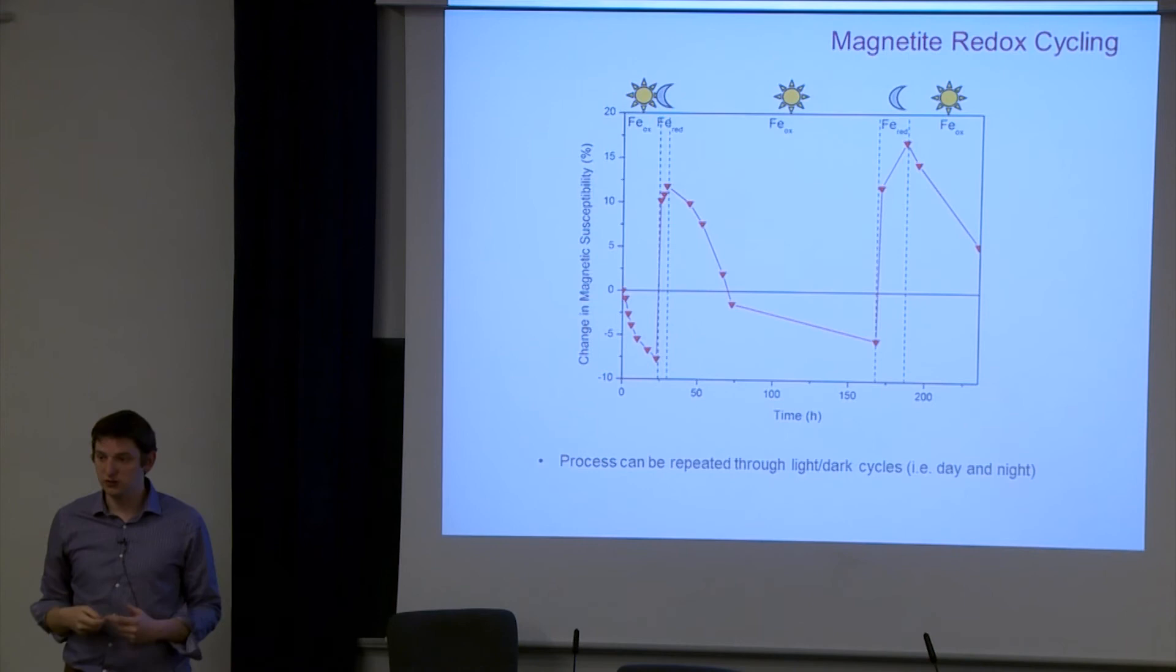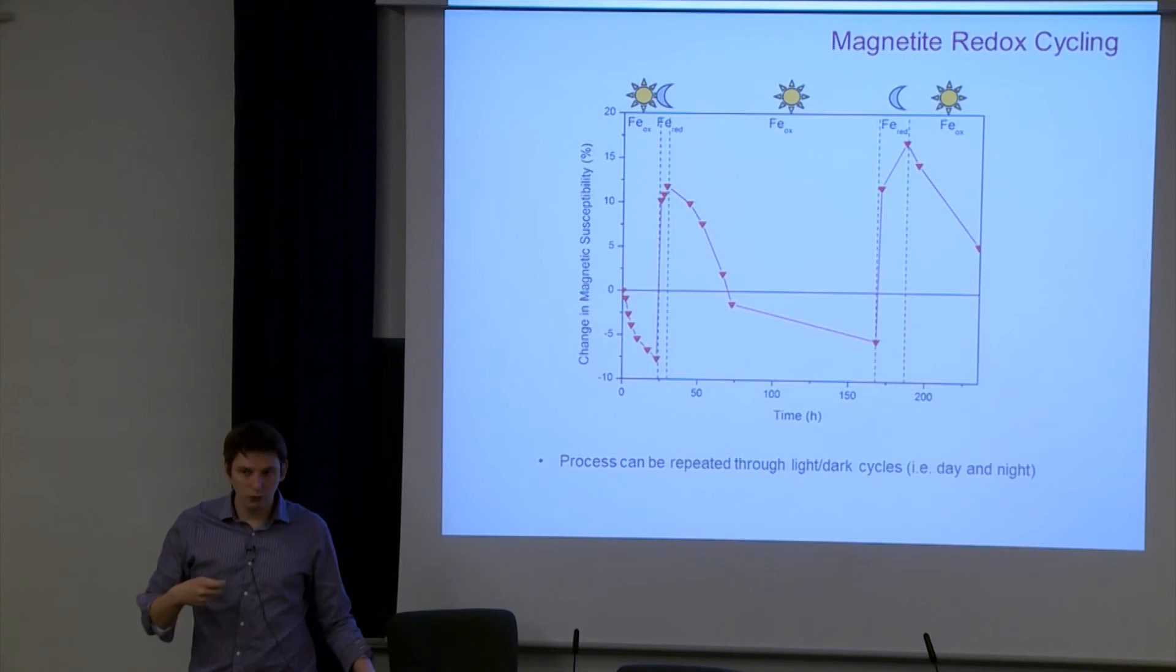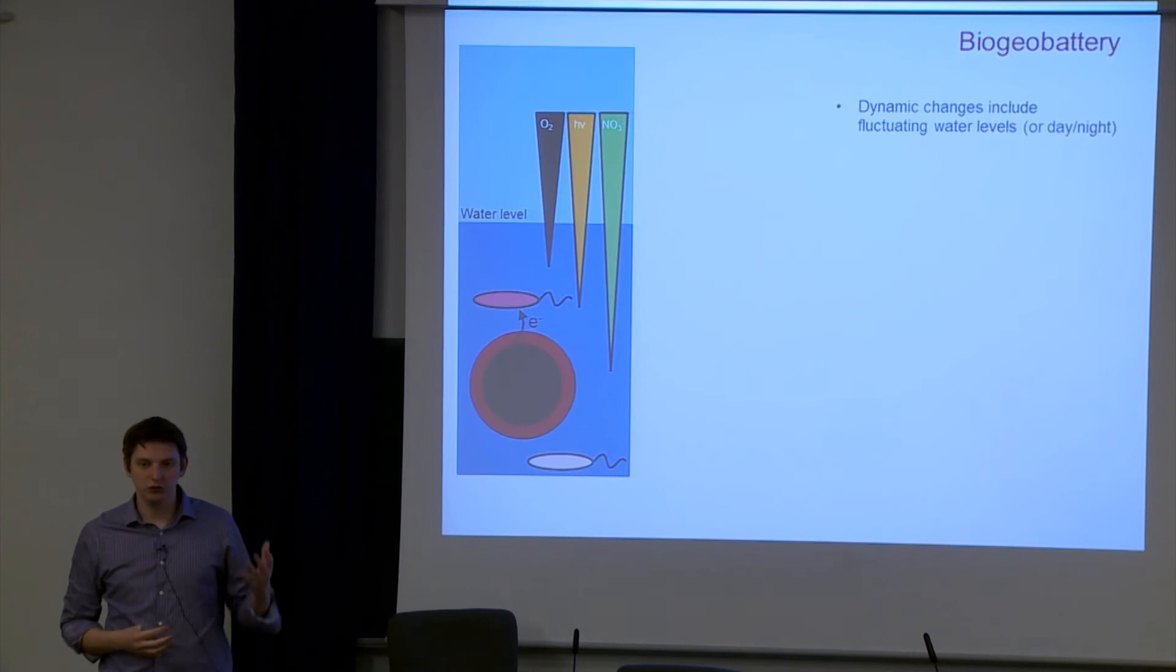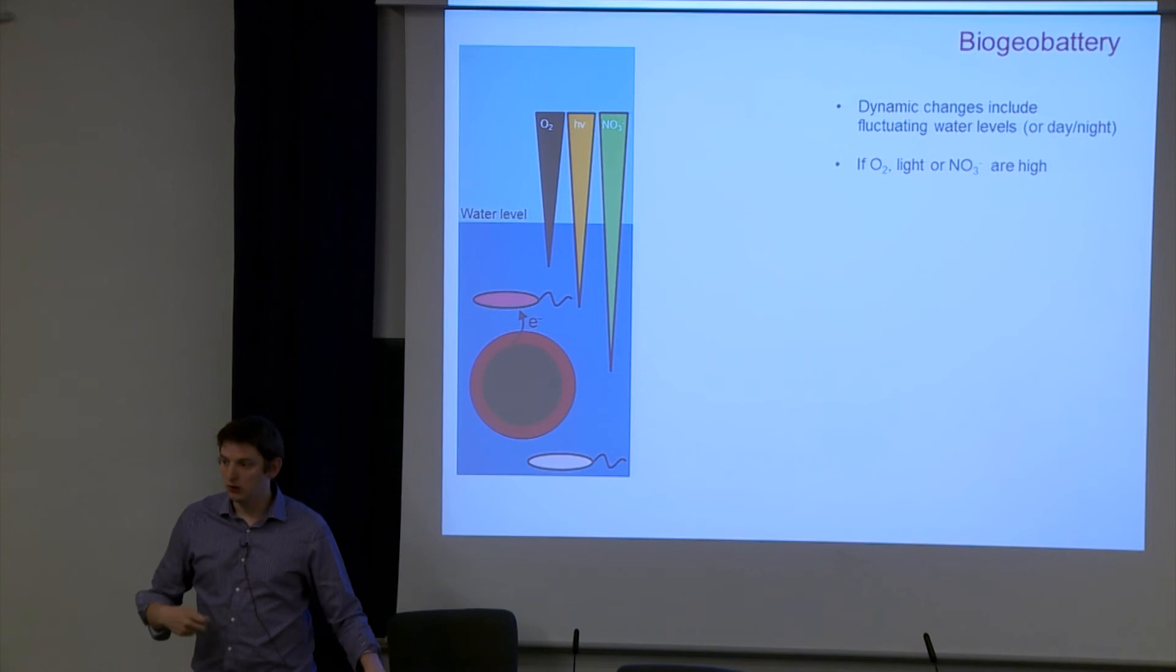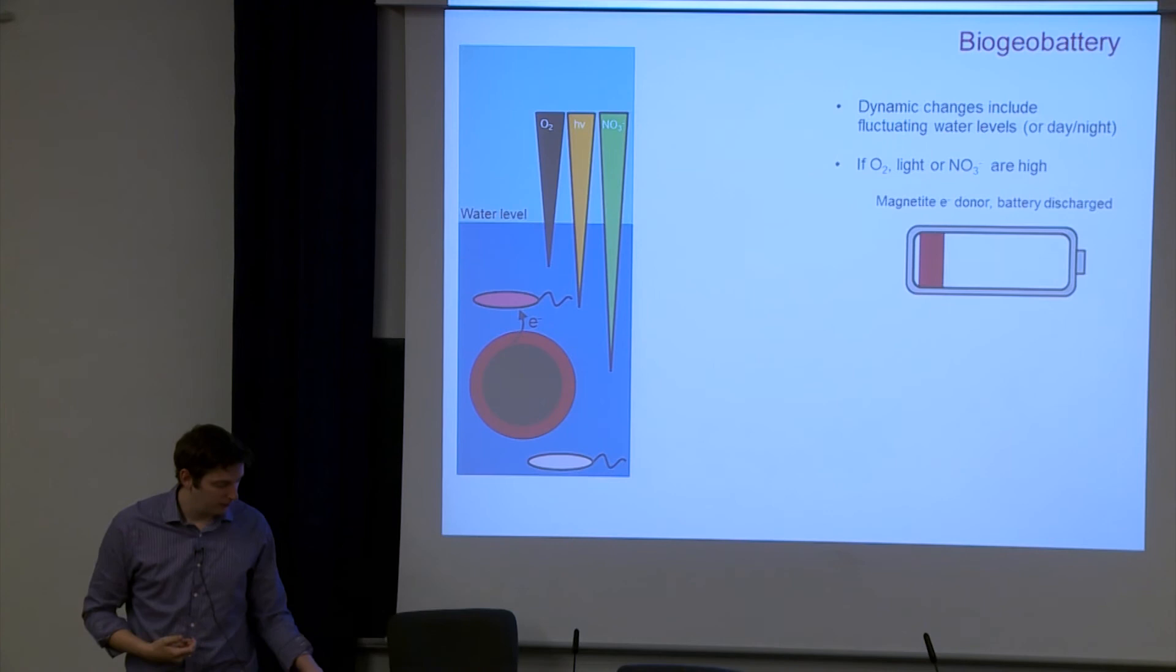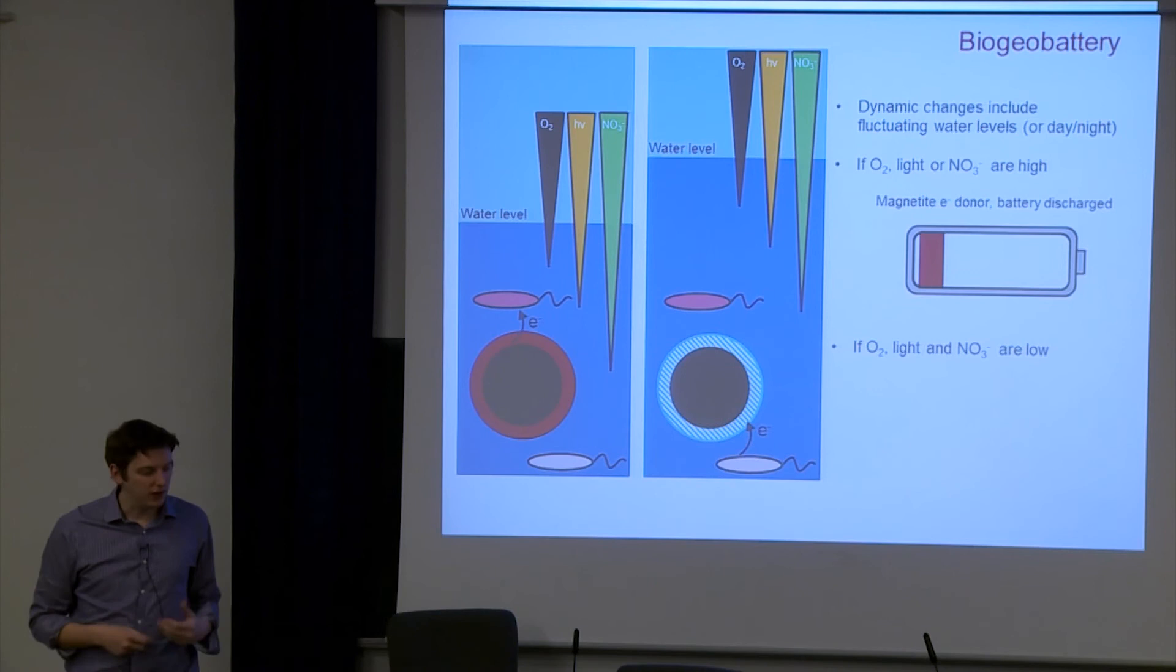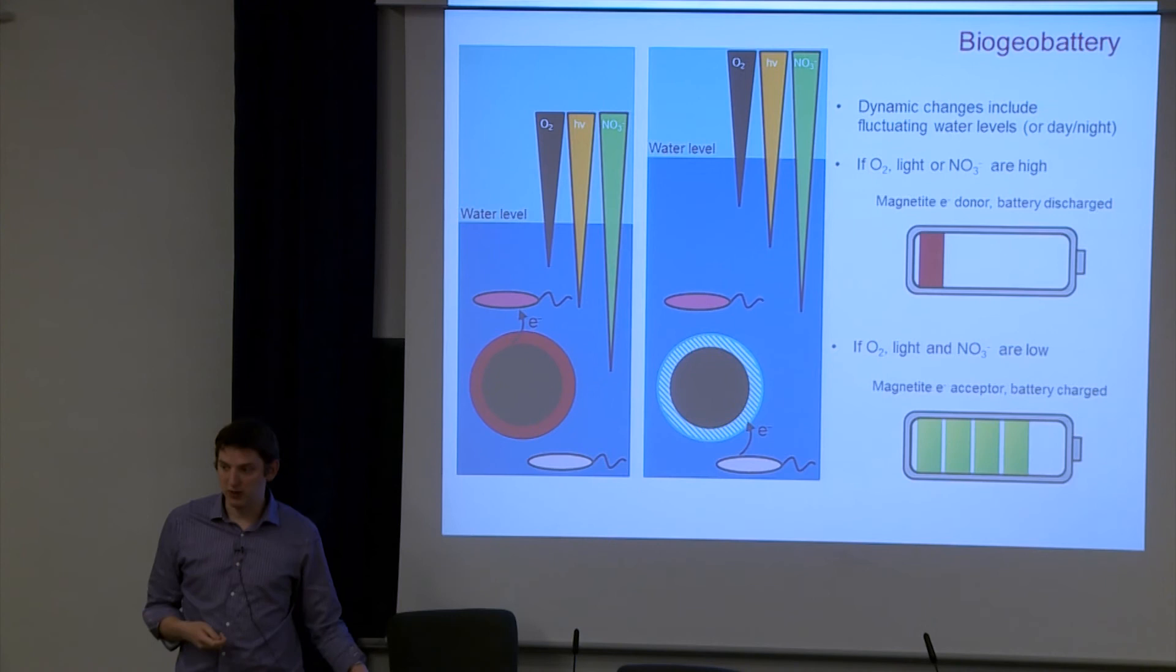This is where we're coming up with this idea of a biogeobattery. The idea that magnetite could support different types of biometabolizing bacteria depending on the conditions present. For instance, you might have conditions where water levels are low, and you've got oxygen penetration or light or nitrate concentrations sufficient for the iron oxidizing bacteria. In this case, the bacteria are taking the electrons out of the magnetite. They're basically discharging this biogeobattery. Later on, you might have in the dark, or the water level might have risen, and you don't have the same penetration of oxygen, light, or nitrate. At this point, the Geobacter are now pumping their electrons back into the magnetite and recharging the battery, ready for the next process when the oxidizer might be requiring it. This is the idea behind this biogeobattery.